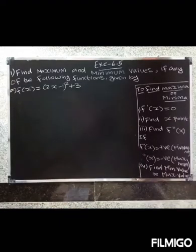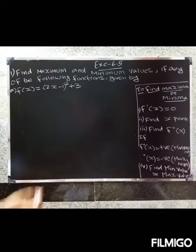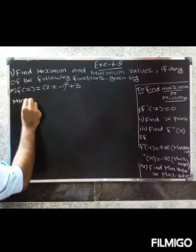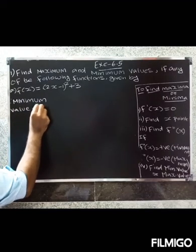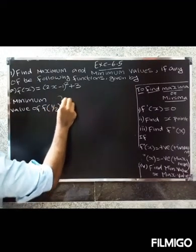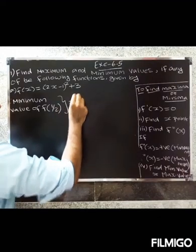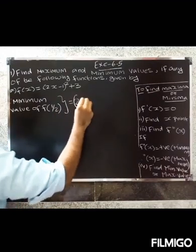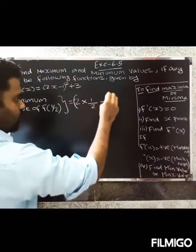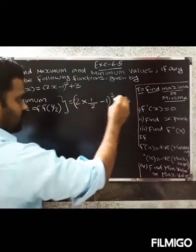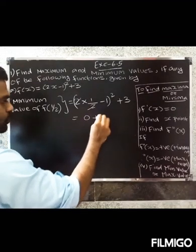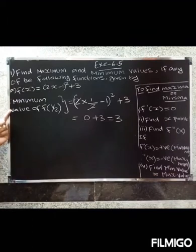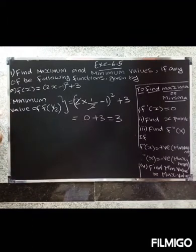So f(1/2) = (2 × 1/2 - 1)² + 3. Here 2 × 1/2 = 1, so 1 - 1 = 0, giving 0² + 3 = 3. Therefore the minimum value of f(x) is 3.